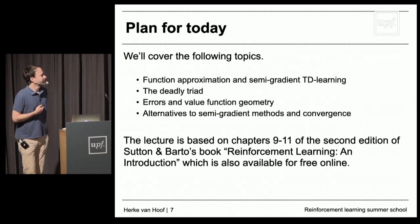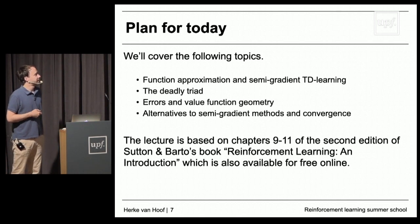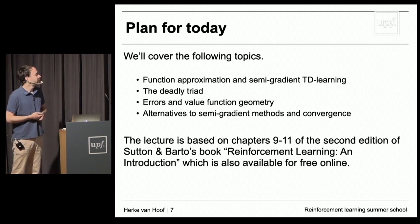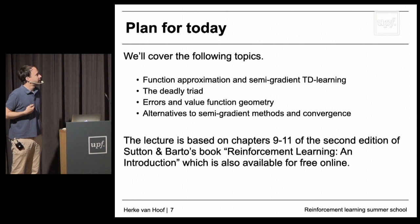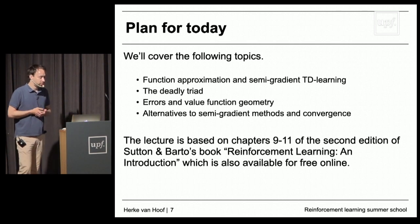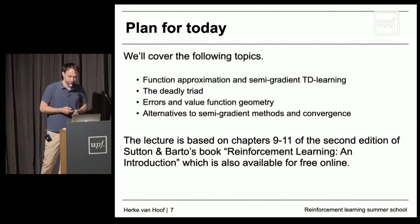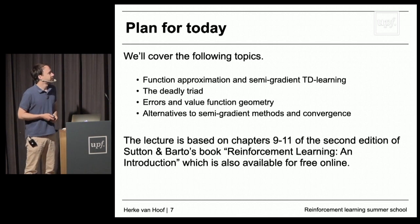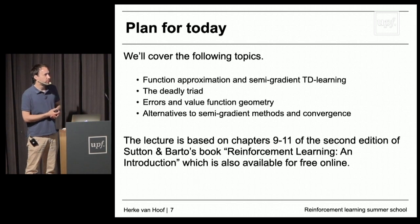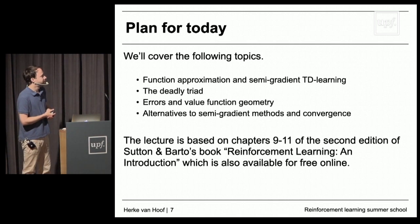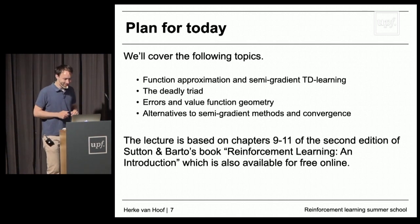Our plan for today: we'll cover function approximation and semi-gradient TD learning — the first algorithm for learning with approximation. Then we'll see what kind of problems you end up with — the deadly triad. Then we'll dive into errors in value function geometry, and finally look at alternatives to semi-gradient methods. My own research interest is more in actor-critic methods and hierarchical structures, but I'll try to answer any question as well as I can. The Sutton and Barto book is available for free online as a good resource.